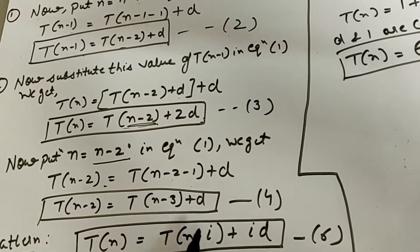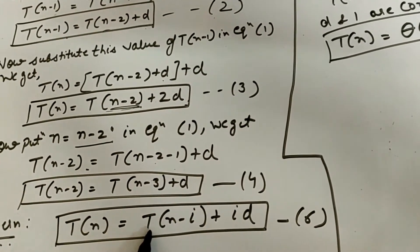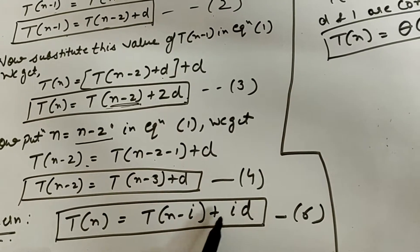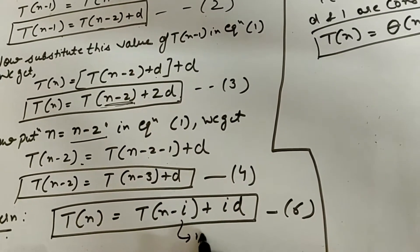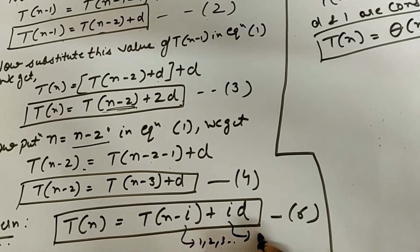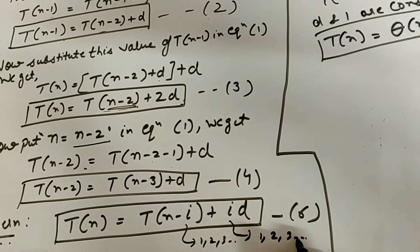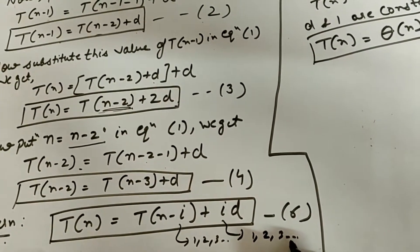So if we see here, then there is one type of pattern, that means T(n) is equal to T(n-i) plus id. Okay, so here i, which term means one, two, three, will change. And here the id is the value, and the number of times you will substitute, that number of times i will increase.